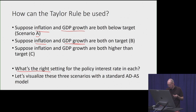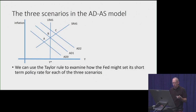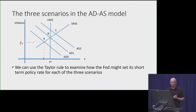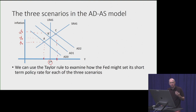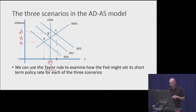We can visualize these in the aggregate demand and aggregate supply model. Starting with Scenario A, imagine inflation is around 1% and GDP is below its maximum sustainable rate — so both economic growth and inflation are below target. Scenario B, using the Fed's 2% inflation target, has inflation at about 2% with the economy in equilibrium at its maximum sustainable level of output. Scenario C might involve relatively elevated inflation where the economy is overheating and at least temporarily above full employment output.